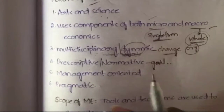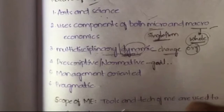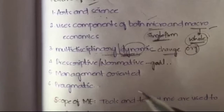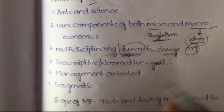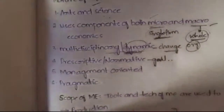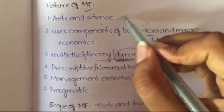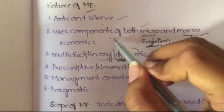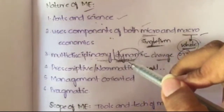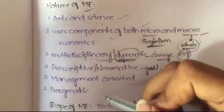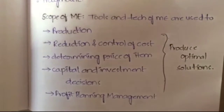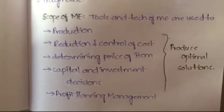And finally, managerial economics is pragmatic, meaning it deals with practical situations. To summarize the nature: it follows arts and science, uses components of both micro and macro economics, is multidisciplinary and dynamic, is prescriptive and normative, is management oriented, and is pragmatic.